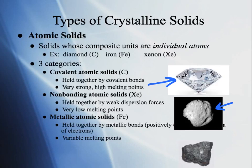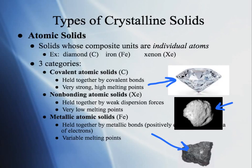Third, metallic atomic solids — like iron. These are held together by metallic bonds with a sea of electrons. They're going to have variable melting points depending on the strength of the metallic bonding. These are your classic crystalline metal structures.